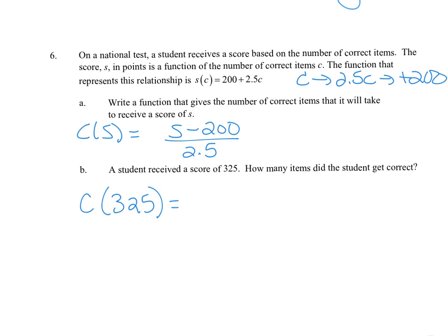If we got a score of 325, how many items did the student get correct? You can use your calculator for this arithmetic. We get 50 items.